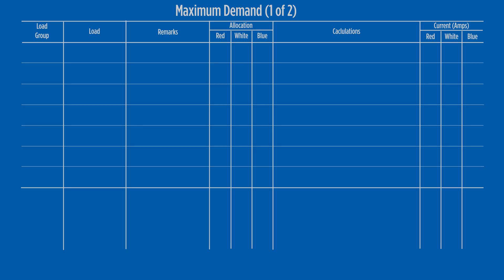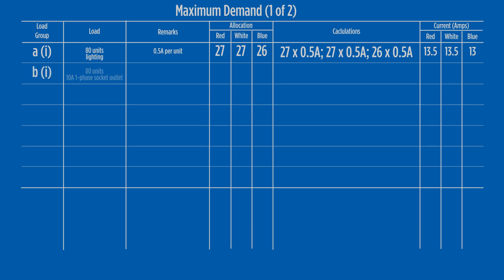Now that we understand how table C1 works, we can match the load groups to the correct column for load allocation. In load group A1, column 5 allows 0.5 amps per living unit, which gives a value of 13.5 amps per phase. Load group B1 allows 50 amps plus 1.9 amps per unit, so this will be 50 plus 27 times 1.9, to give a total of 101.3 amps per phase in this load group.